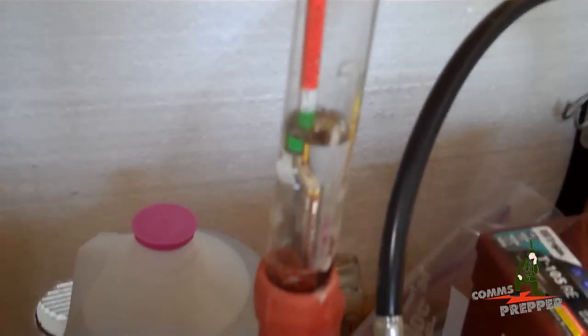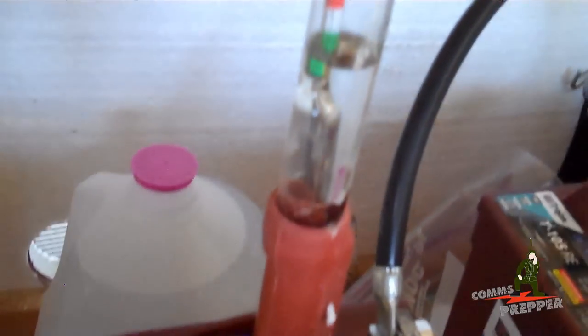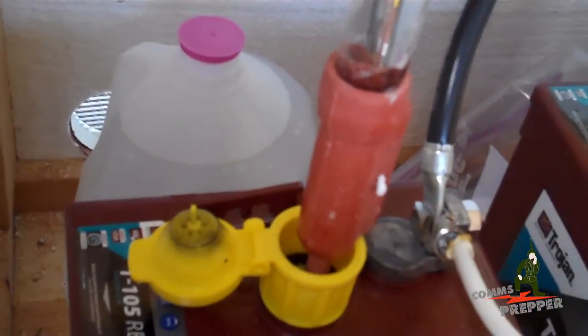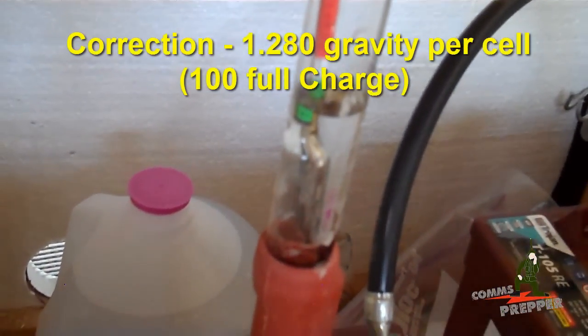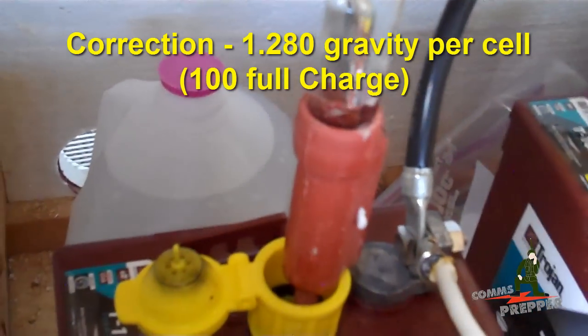Alright guys, it's kind of hard to do this with two hands, but what I'm doing here with this hydrometer is checking the specific gravity for each of the 12 cells. I believe the correct number, what I'm looking for, is 1.670 gravity for each cell. I'll check that on the battery information I have and make sure the correct number is in the description of this video.